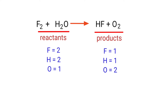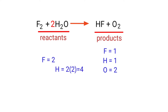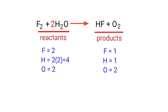In this equation we need to balance the oxygen atoms first. To do this we need to put a coefficient of two in front of H₂O. The oxygen atoms are now balanced.